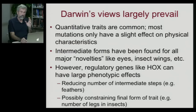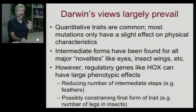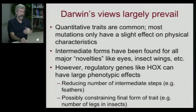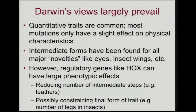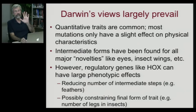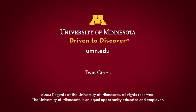However, we do very much have a more modern appreciation that there are genes — these regulatory genes, like the homeobox or the Hox genes — that can have very, very large phenotypic effects. The consequence of this is that it reduces the number of intermediate steps to go from a simple form to a more complex one, which may have been involved with the evolution of feathers from simple spines to more complex structures. And these homeobox genes also likely constrain the final form of a trait — why we have five fingers as opposed to six, and why insects have six legs instead of ten.